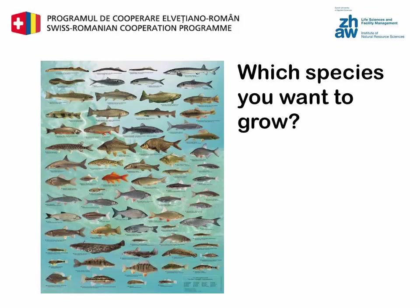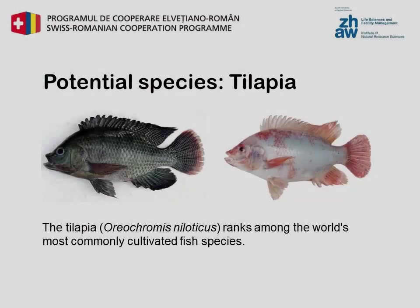With more than 20,000 known species, fish form the largest group of vertebrates on Earth, but only a small percentage of them are suitable for aquaculture. Four potential species will be presented on the following slides. The tilapia ranks among the world's most commonly cultivated fish species. The advantages of tilapia are that it is a robust fish that grows very quickly under good conditions; it can be ready for harvest after 6 to 10 months. As an omnivorous species, it has a large feeding spectrum and can also consume vegetable protein sources, making it possible to use vegetable fish feed.